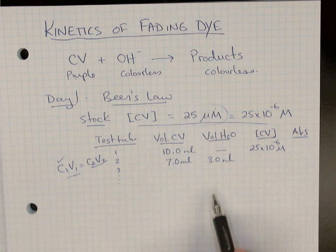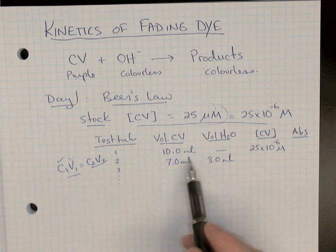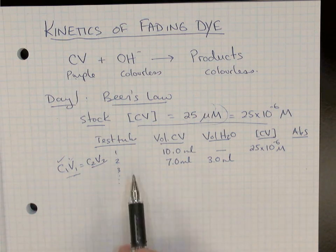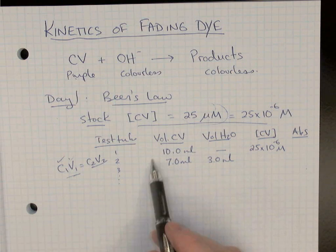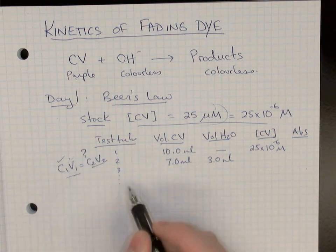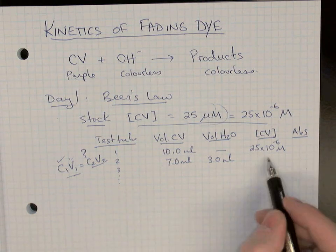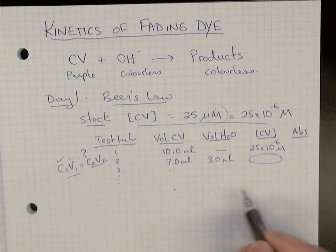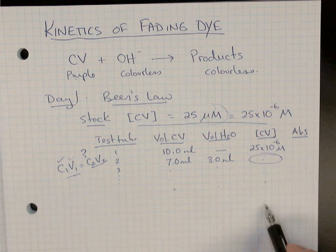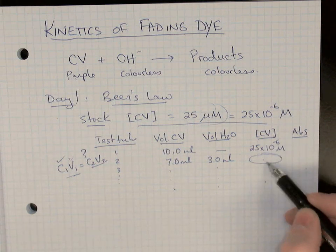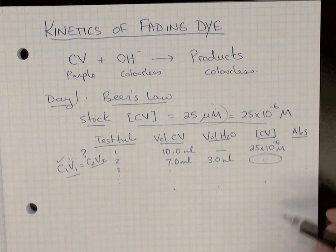To calculate the concentration of crystal violet, you use the dilution formula C₁V₁ = C₂V₂ — the moles before dilution equal the moles after. C₁ is the stock concentration, V₁ is the volume of crystal violet used, V₂ is the total final volume, and you solve for C₂. Do that for each of your five or six test tubes and you'll have a series of crystal violet concentrations. The color should go from darkest in the stock and get lighter as you dilute with water.